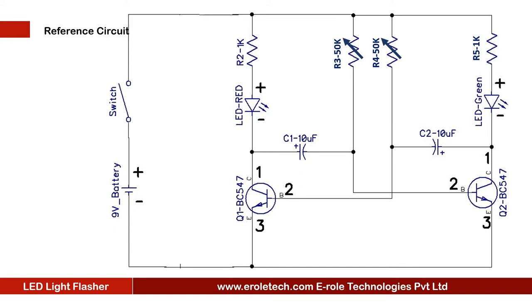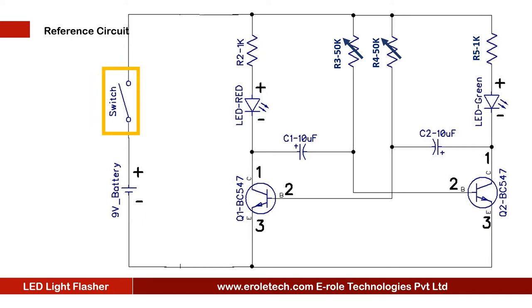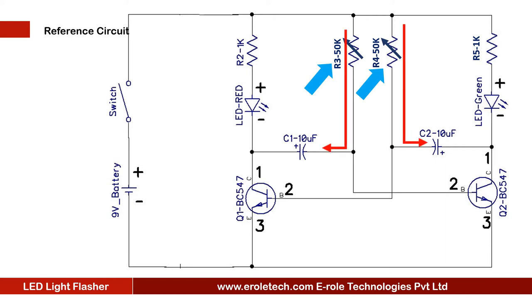To understand the circuit diagram of the bike turn indicator, we will first take reference from the LED flasher circuit. A 9-volt battery powers the circuit, and an on-off switch is used to start or stop the project. When we switch on the circuit, current flows through the 250-kilo-ohm variable resistors. A transistor turns on when it gets 0.7 volts at its base terminal. One terminal of capacitors C1 and C2 is connected to the positive supply, but they will not start charging unless the second terminal connects with ground.